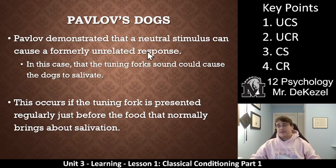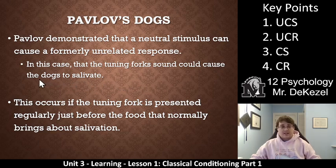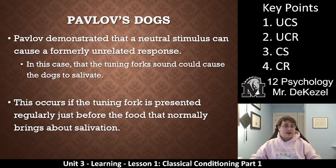Pavlov demonstrated that a neutral stimulus can cause a formerly unrelated response — a bell can cause salivation. This occurs if the tuning fork is presented regularly just before food that normally brings about salivation. For example, if you ate all your vegetables as a kid, your parents would give you dessert. You would learn to associate finishing your vegetables with doing something good and getting dessert. Or, if you don't put your seatbelt on in the car, the dinging will happen, and you associate those two things. That is classical conditioning.